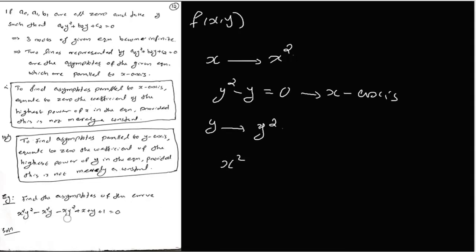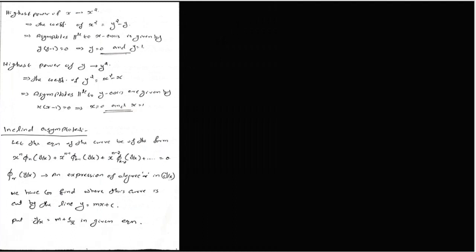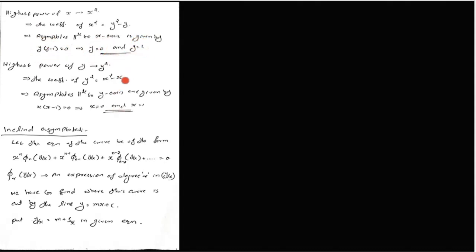So, minus x equals 0 is one asymptote. The coefficient of x squared gives y squared minus y equals 0, that is y(y − 1) = 0. Therefore y = 0 and y = 1 are the asymptotes parallel to the x-axis.